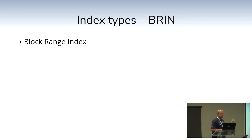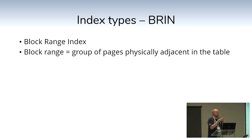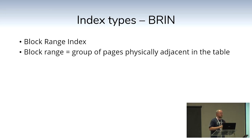The BRIN index — Block Range Index — is a very nice index if your data is ordered. What it does is take blocks of data and work out the min and max range within each block of pages, only caring about those min and max values. So instead of storing the value for a million rows, you might store the min and max for 10,000. If you're looking for 50,000, it finds the blocks where the range could contain that value, fetches that range of blocks, and filters from there.